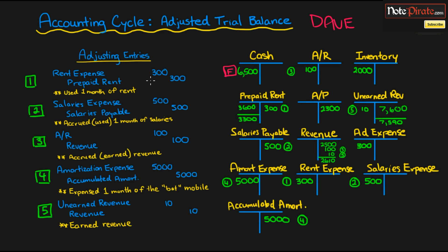Let's go through the different adjusting entries and see how they affected the balances. Our first one is a prepaid expense adjusted entry. We have rent expense being debited for $300 — the left side is always debits while the right side is credits on the T accounts. So our final balance for rent expense is $300. Prepaid rent was credited for $300, so our prepaid expenses, which had an original balance of $3,600, after the credit adjustment of $300, give us a final debit balance of $3,300. I've put numbers next to the different adjustments so you can match them up easily, which is really helpful on quizzes or tests.